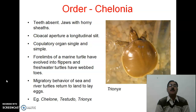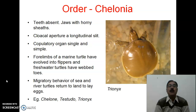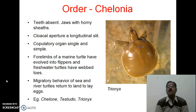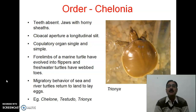The forelimbs of marine turtles have evolved into flippers, and freshwater turtles have webbed toes. Jo inke limbs hote hain — samudri turtle ke andar woh flipper ke roop mein rupantarit ho jate hain, jisse woh aasani se samudra mein tair sakte hain. Their movement on land is clumsy. Freshwater turtles have webbed toes on their fore and hind limbs, helping them swim easily in water, as they have an amphibious lifestyle.